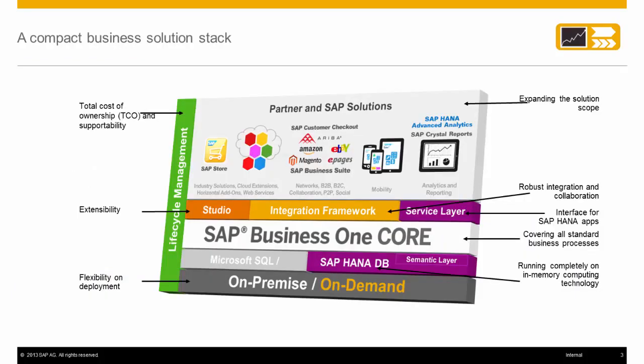SAP Business One is an all-inclusive solution. Its core functionality is available both on-premise or cloud-based, and regardless of how it is implemented, you have the same integration options available. We will discuss the extensibility layer from the diagram, consisting of the SAP Business One SDK in-studio, the integration framework, and the service layer.